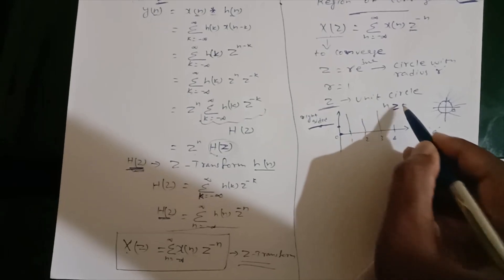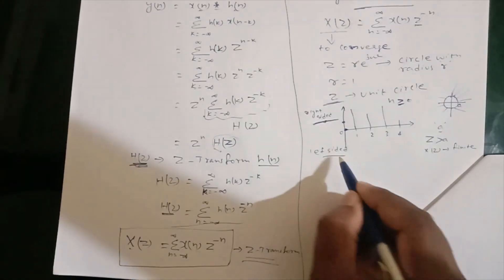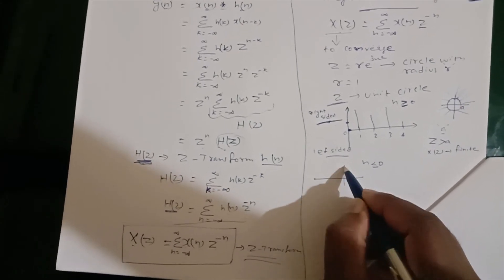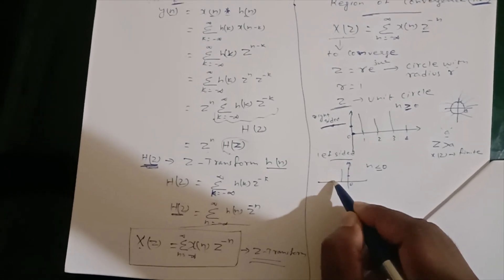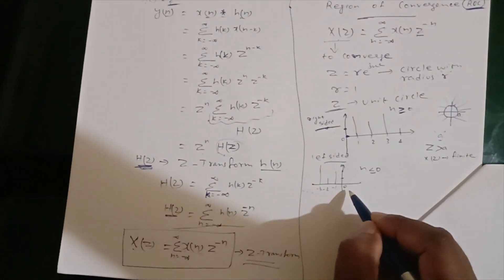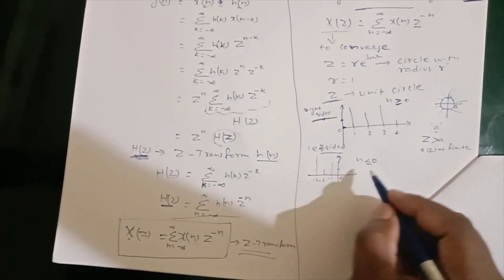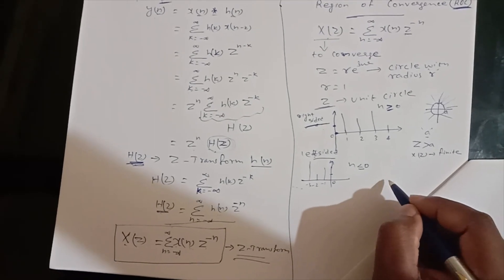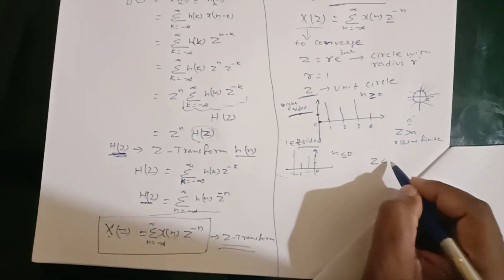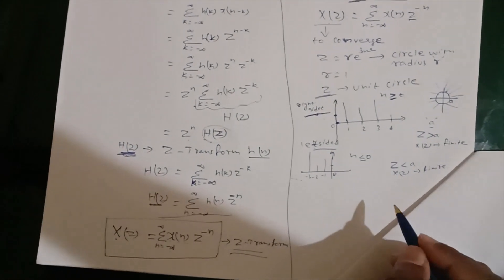For a left-sided signal — where n is less than or equal to zero, meaning the signal has no sequence on the positive side and extends towards minus infinity — the ROC is inside the circle of a particular radius a. That is, for all |z| < a, X(z) is finite. So the region of convergence for a left-sided signal is inside the circle of radius a.